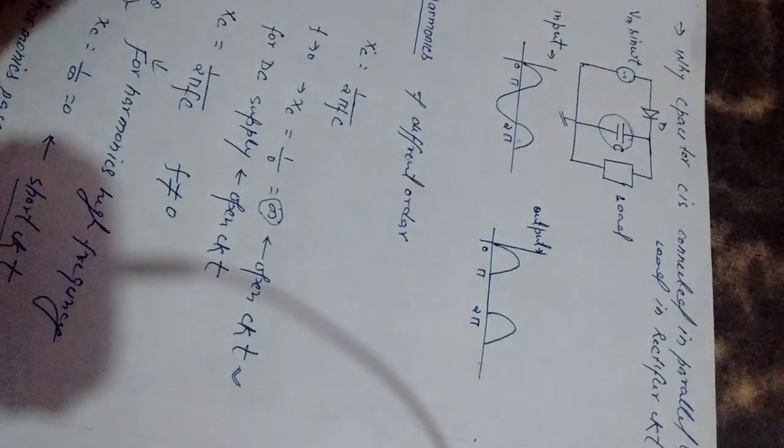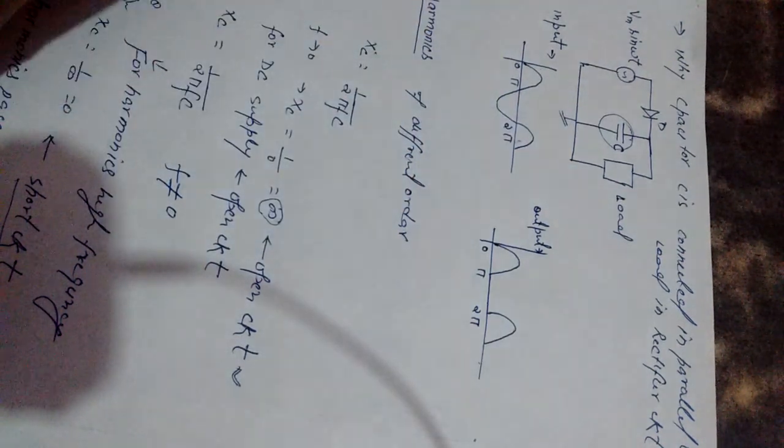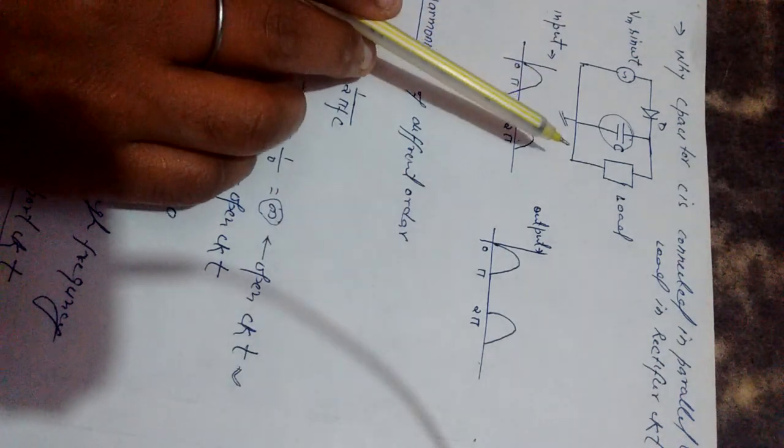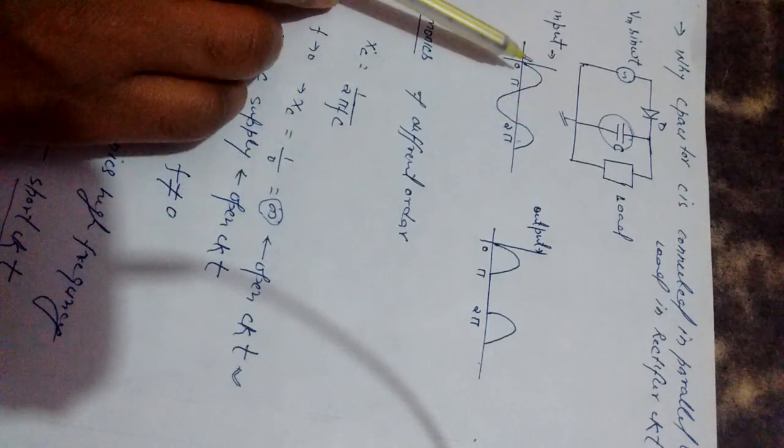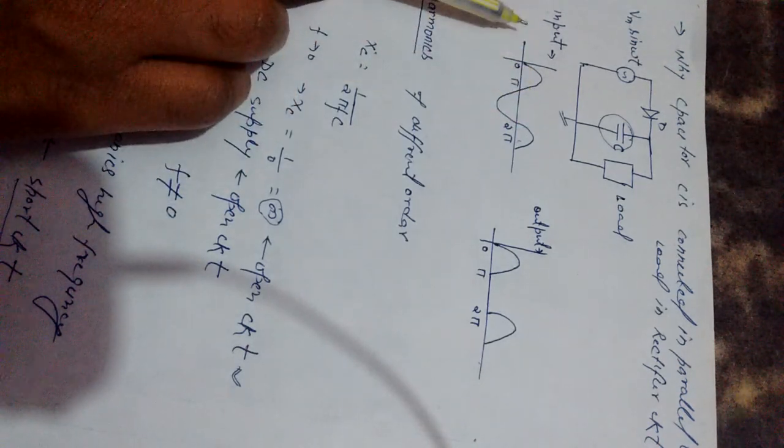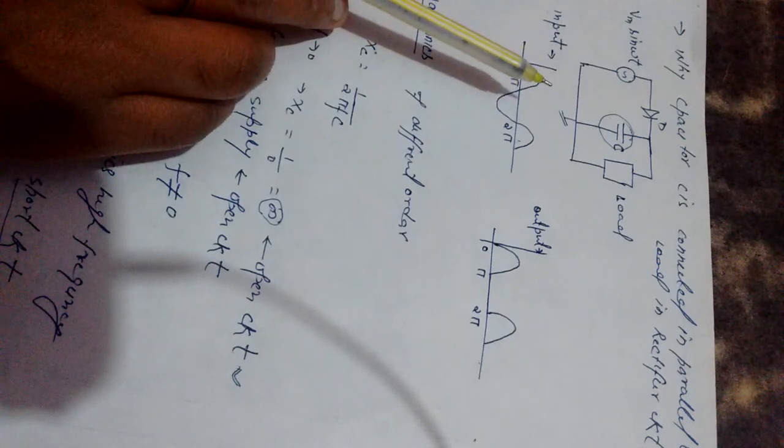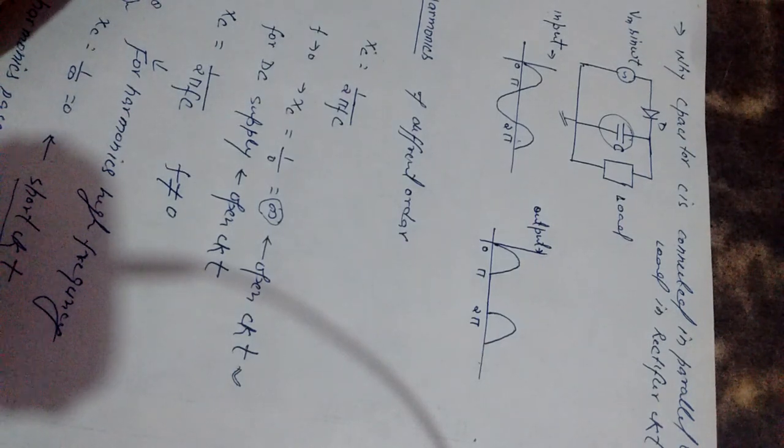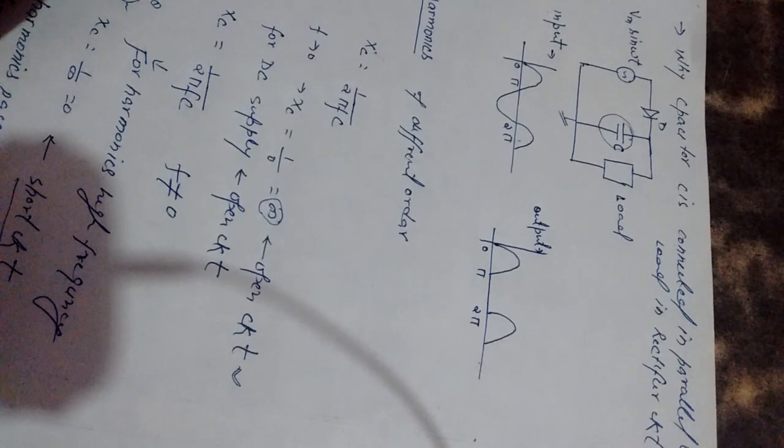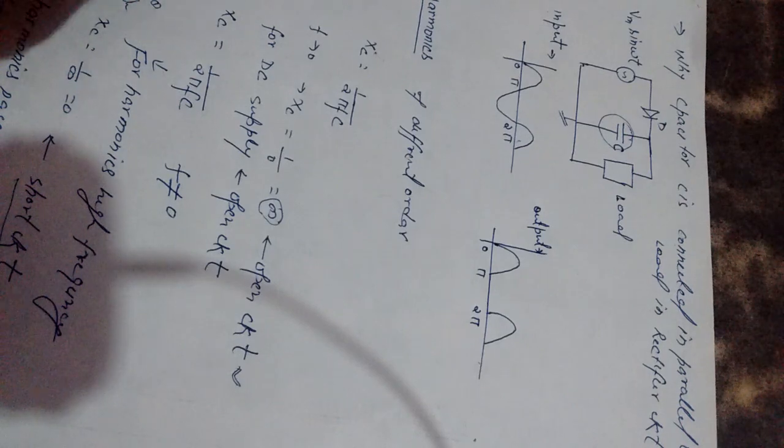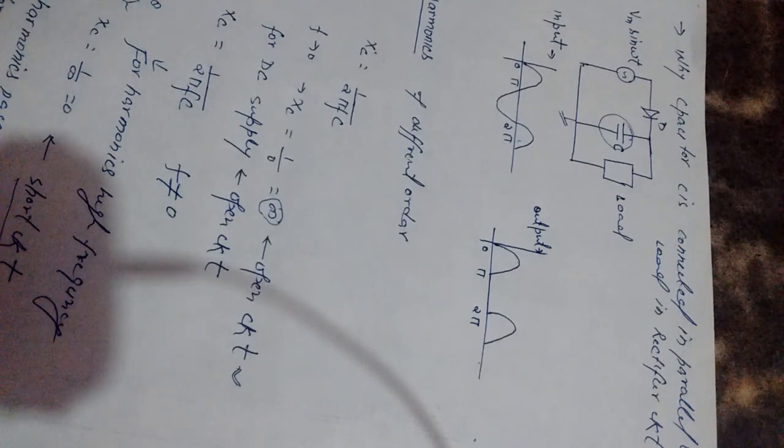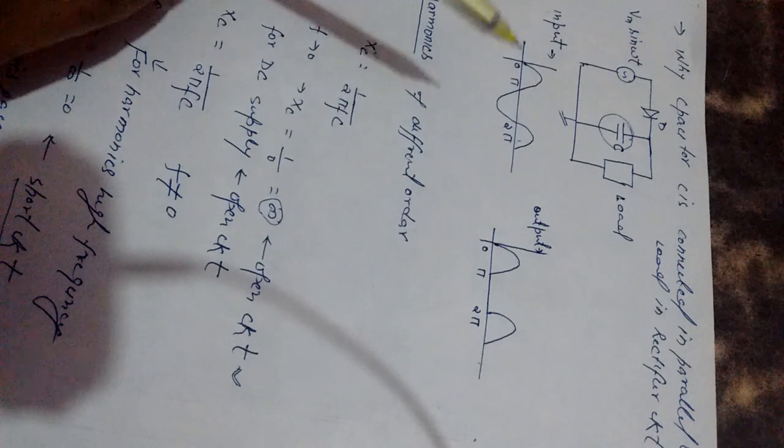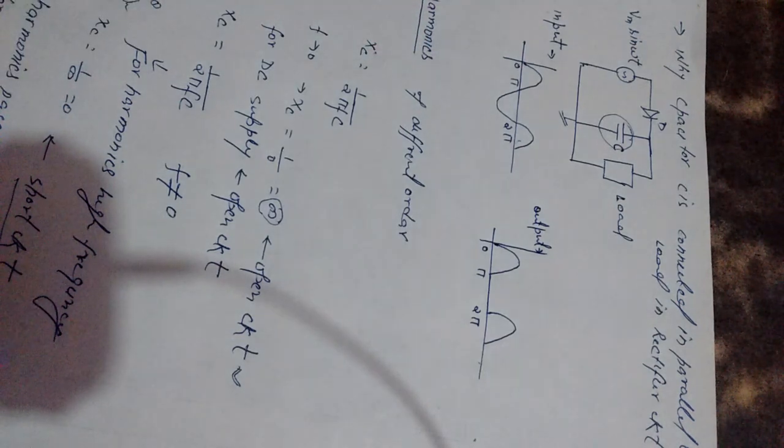That's the advantage of adding a capacitor in parallel to the load. It blocks DC from going to ground and it passes high frequency components to ground, by which the load can safely operate. Because harmonics will always create a problem in the load, we have to remove harmonics as soon as possible. So to get a smooth output waveform, we add a capacitor to avoid harmonics reaching the load.